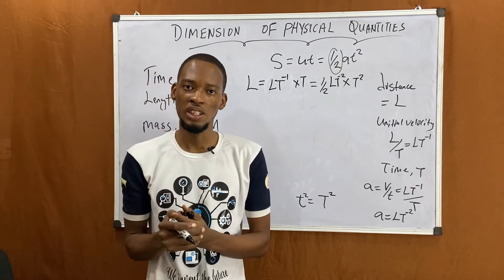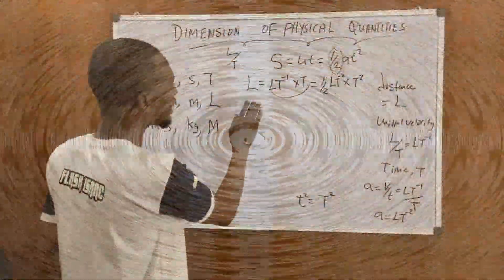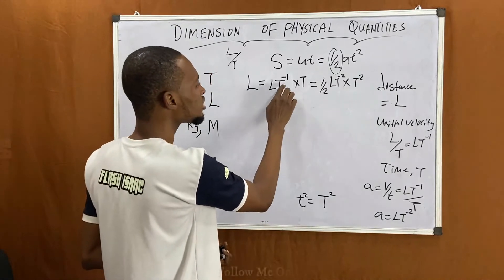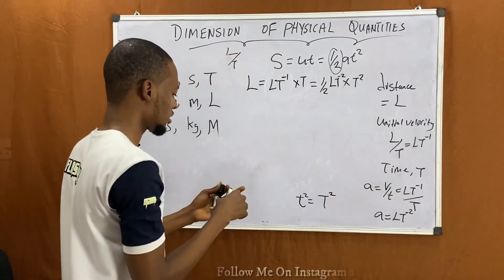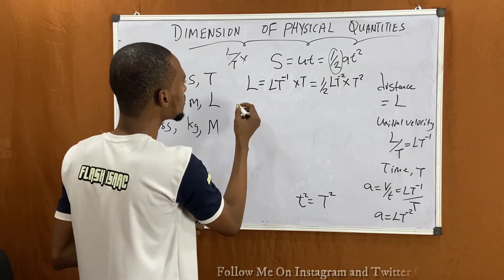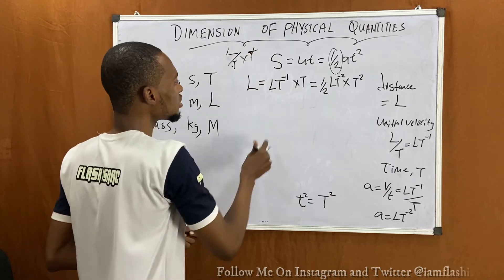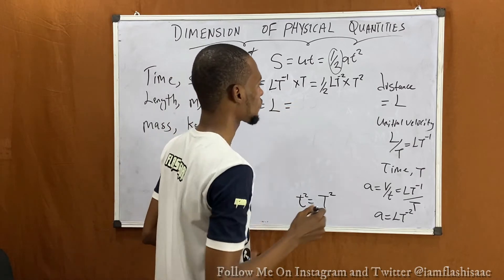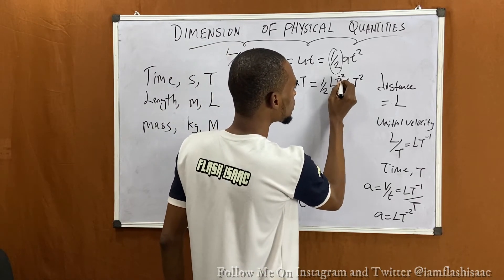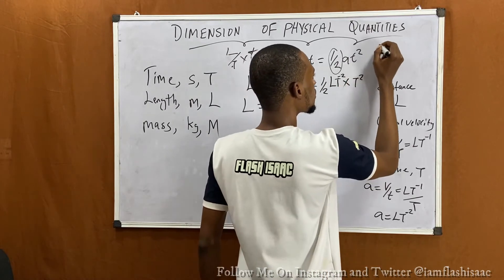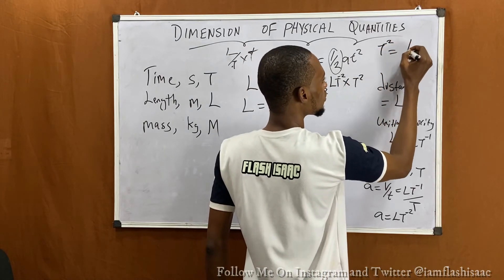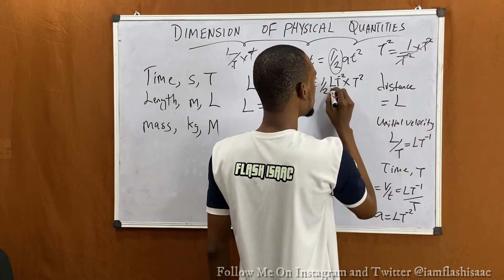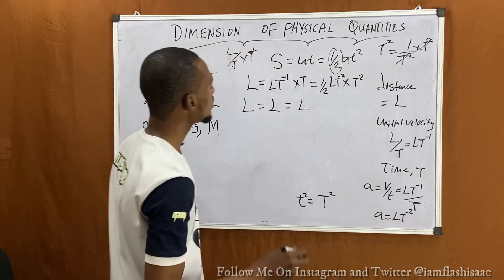Looking at the first term: L·T⁻¹ × T — T⁻¹ times T cancels, leaving L. For the second term: L·T⁻² × T² — T⁻² times T² cancels, also leaving L. So we have L = L = L. Both sides match, so this equation is dimensionally correct.